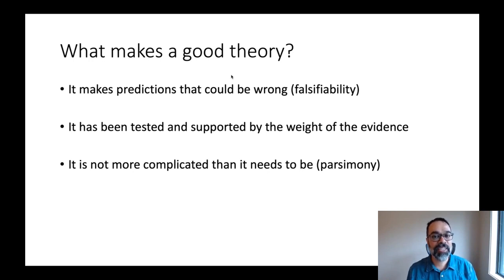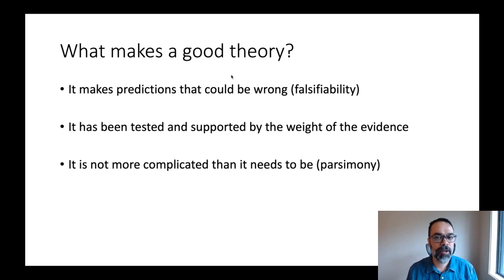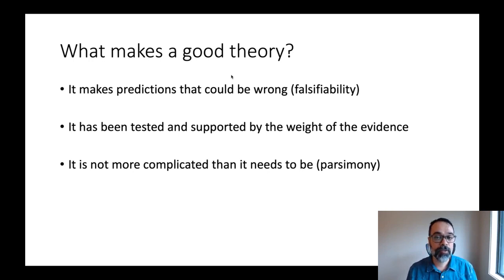Second, we tend to like theories that have been tested and supported by the weight of evidence. Sometimes a theory is brand new; sometimes data doesn't support it and we should probably abandon it; sometimes there's a large body of evidence and we say it's a really good theory — not just in the abstract sense of being falsifiable, but actually supported by evidence. Third, many scientists talk about parsimony: all else held equal, we like theories to be no more complicated than they need to be. A theory that is falsifiable, supported by evidence, and fairly simple is considered a good theory.